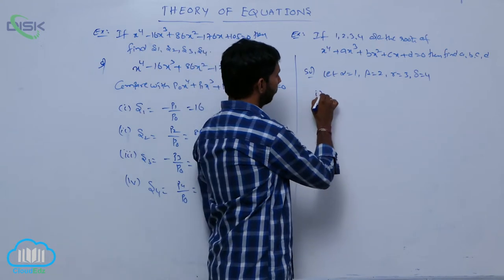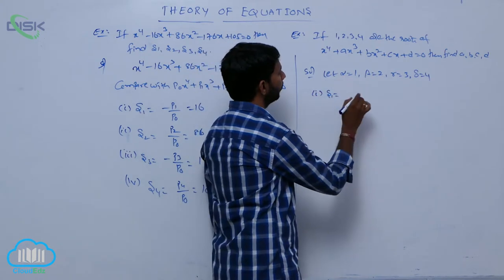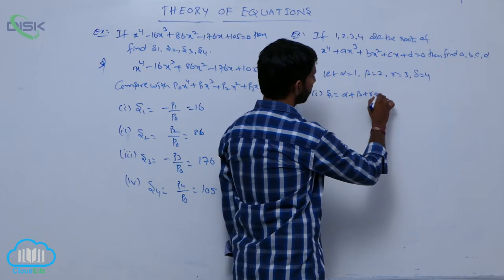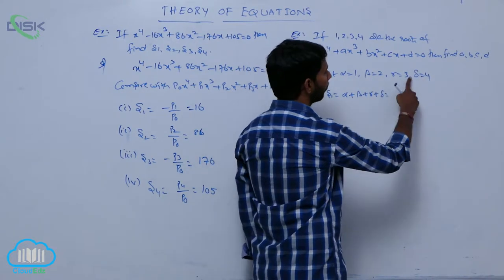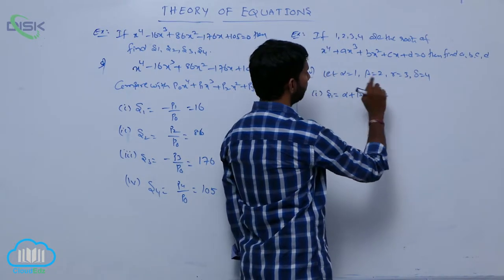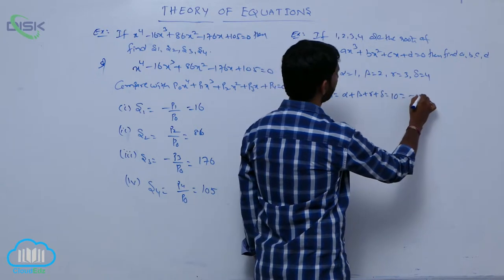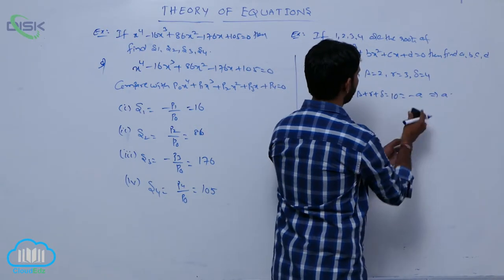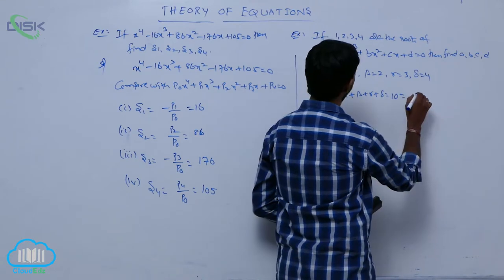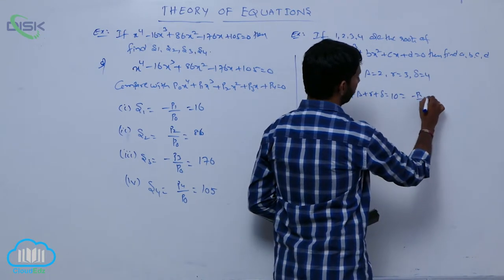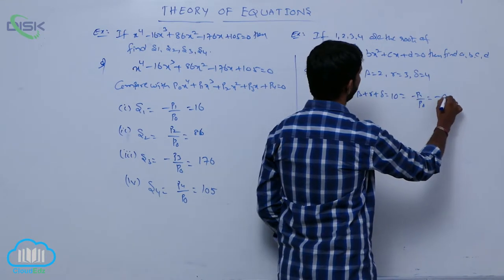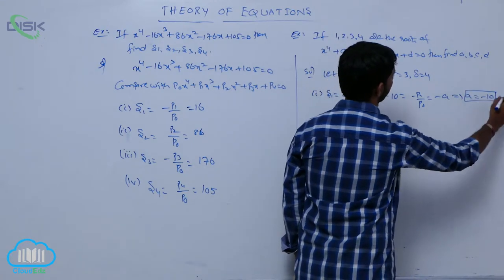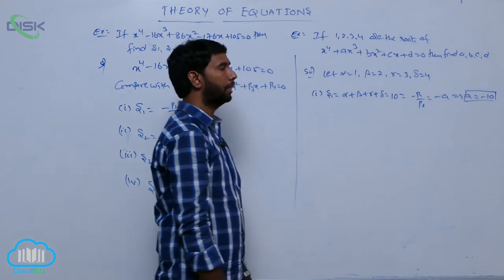First, s1 equals alpha plus beta plus gamma plus delta equals 1 plus 2 plus 3 plus 4 equals 10. Since s1 equals minus p1 by p0 equals minus a, we get 10 equals minus a. Therefore, a equals minus 10.